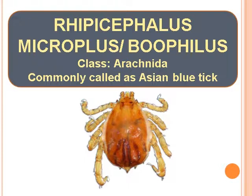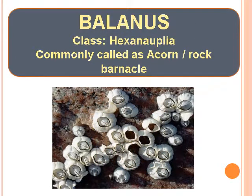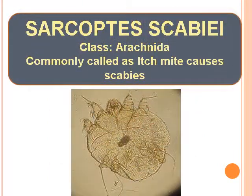Rhipicephalus Microplus or Bufillus — Class Arachnida, commonly called as Asian Blue Tick. Balanus — Class Hexanauplia, commonly called as Acorn or Rock Barnacle. Sarcoptes Scabiei — Class Arachnida, commonly called as Itch Mite, which causes Scabies.